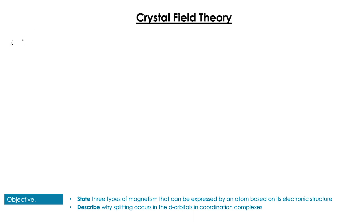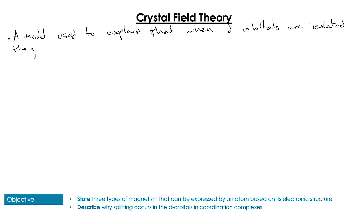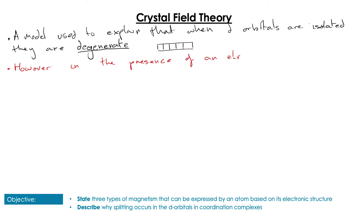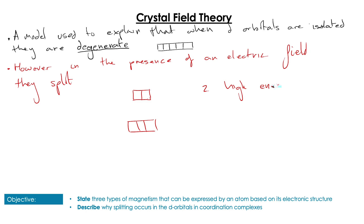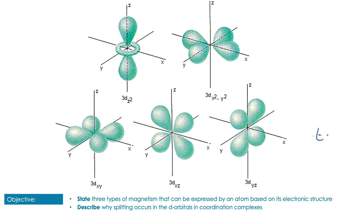Moving on to crystal field theory — this is really a theory we use to help us explain how these d orbitals change. The way we presented them in magnetism is that all of those orbitals would be of the same energy, which we call degenerate d orbitals. However, what we actually find is that when they're in the presence of an electric field the d orbitals split. That split causes two of the d orbitals to become higher energy and three to become lower energy. The reason for this is to do with the shapes of the d orbitals. The two high-energy orbitals are called the eg and the three low-energy are called the t2g.